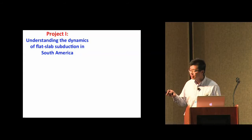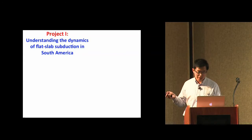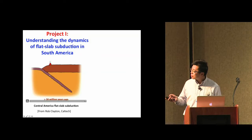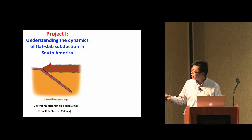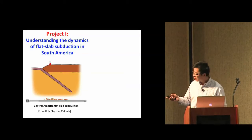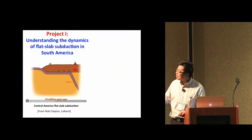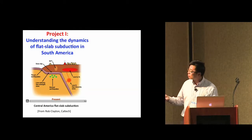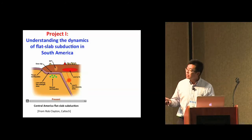The first project is to investigate the dynamics of flat slab subduction in South America. To give some brief background: in this geometry showing the Central American flat slab, 30 million years ago subduction was pretty normal — the downgoing slab or ocean plate was steep, subducting beneath the continent. Over time the dip angle reduces, eventually becoming almost zero degrees, which is what people traditionally call flat slab.